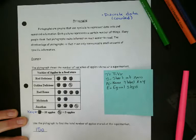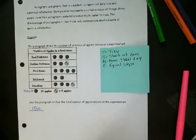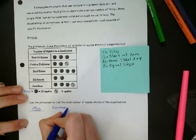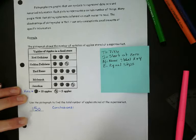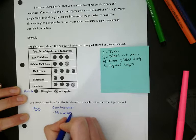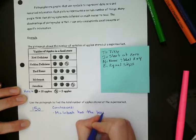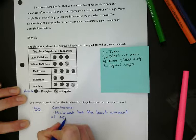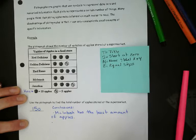And for this type of graph, you can also make conclusions. So whenever we look at a graph, always plan to make some conclusions. And I look for at least two, usually. So from this graph, we can say that McIntosh has the least amount of apples.